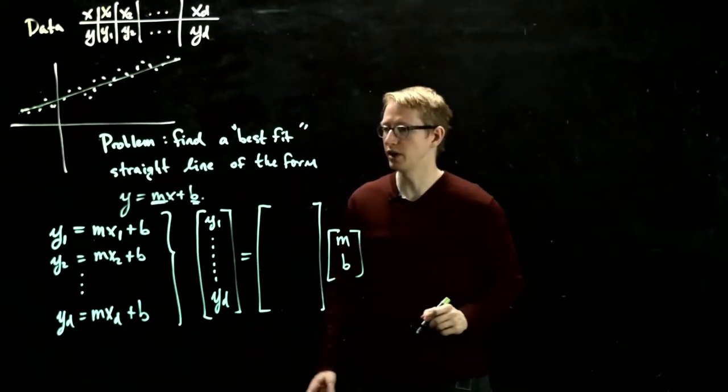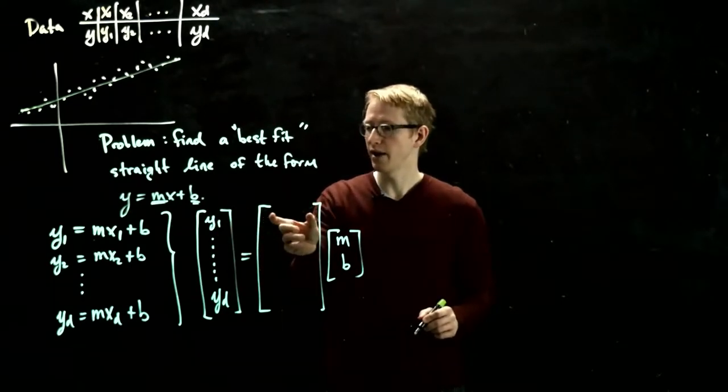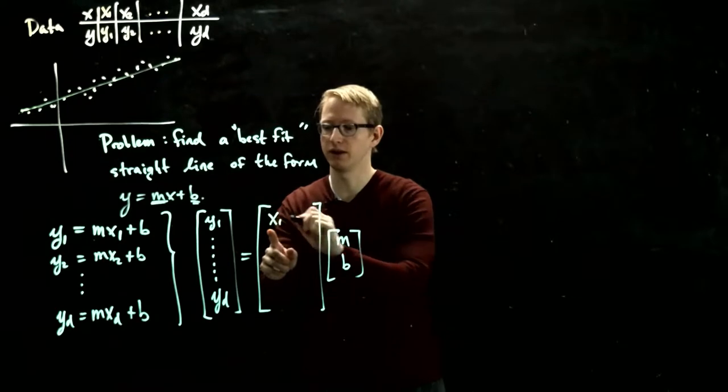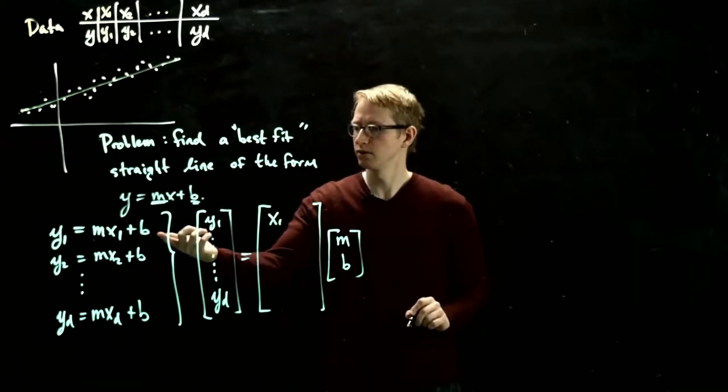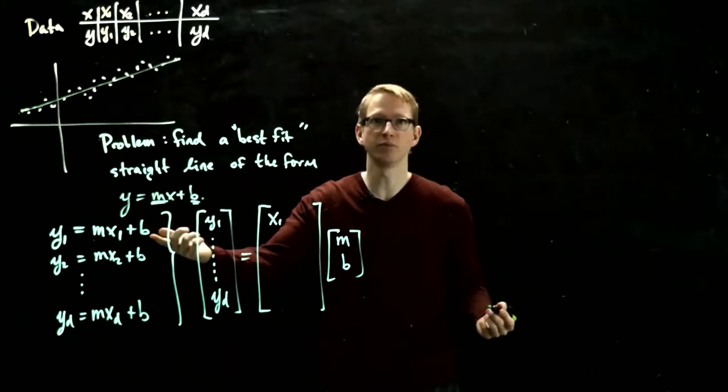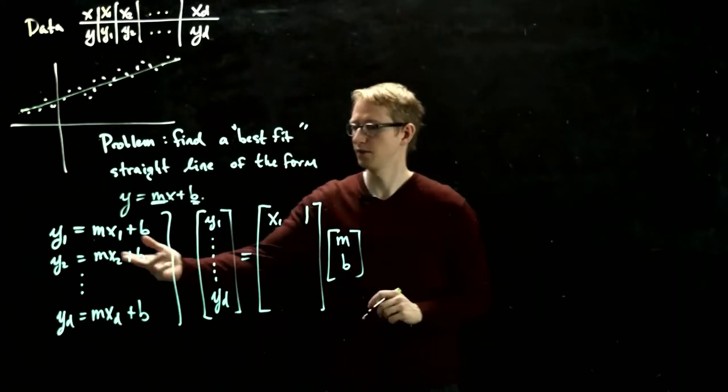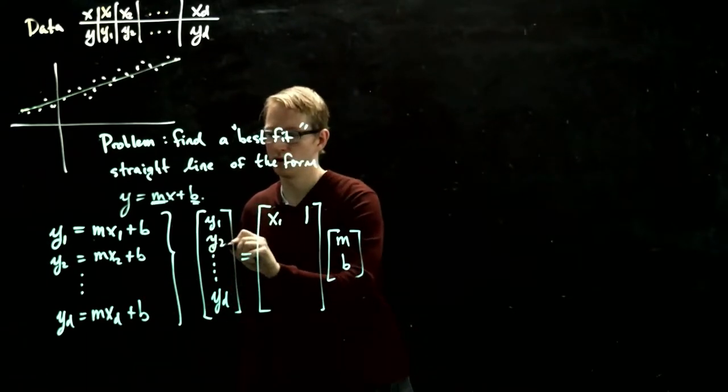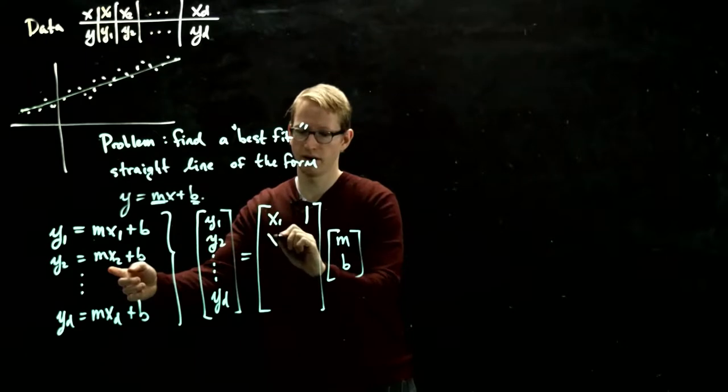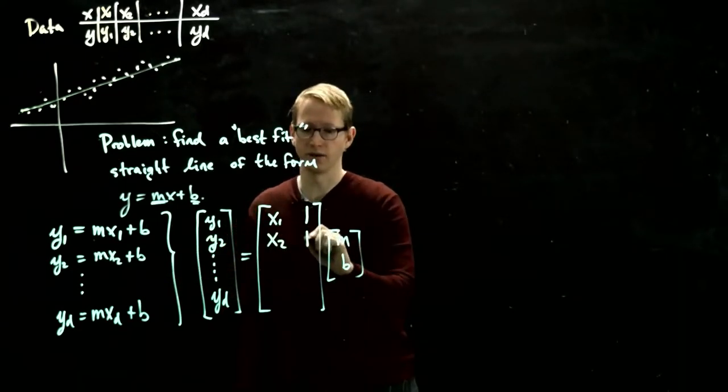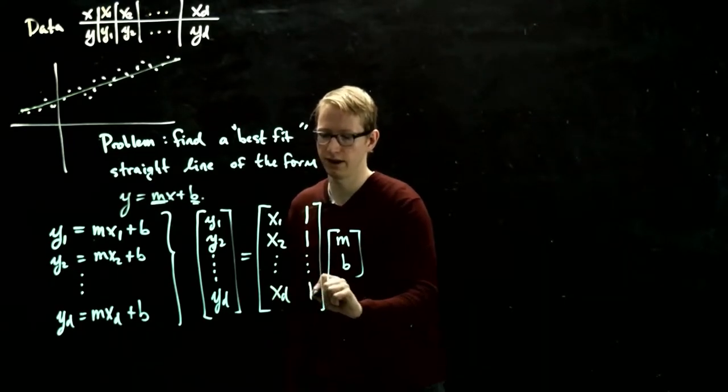So you could actually write this as a d by 2 matrix acting on the vector mb. Now what should this matrix be? We want it to satisfy the equation y1 equals mx1, so x1 has to go in this column, plus b times, what's the only thing that's going to leave b exactly where it is? The number 1. And the same thing here if we had y2, we would want to write y2 equals mx2 plus 1 times b, and so on, all the way down to xd and 1.